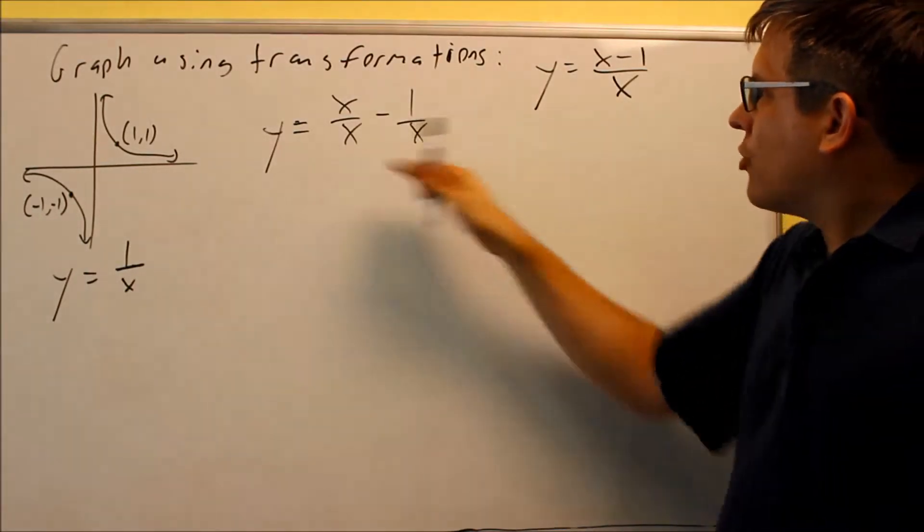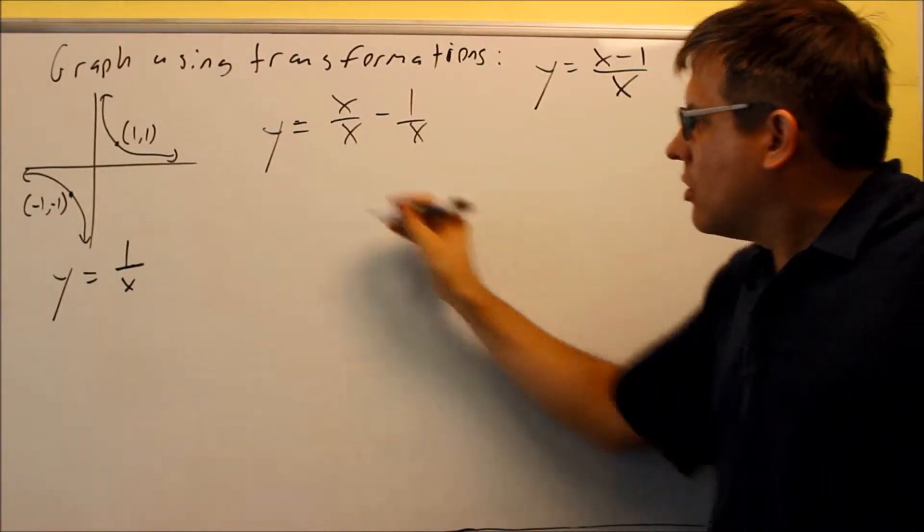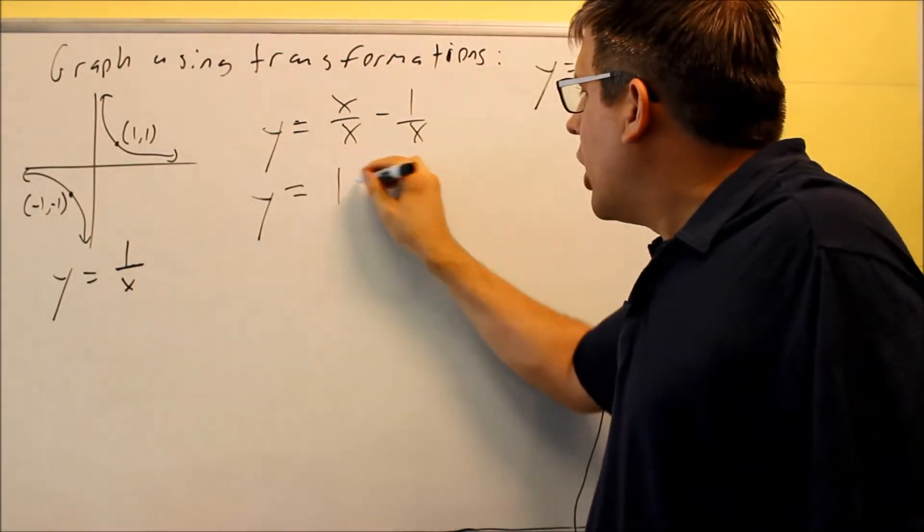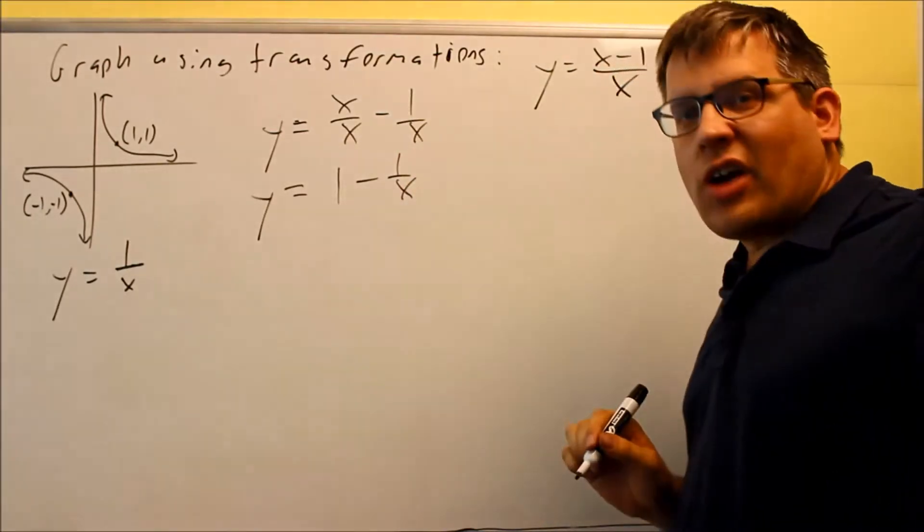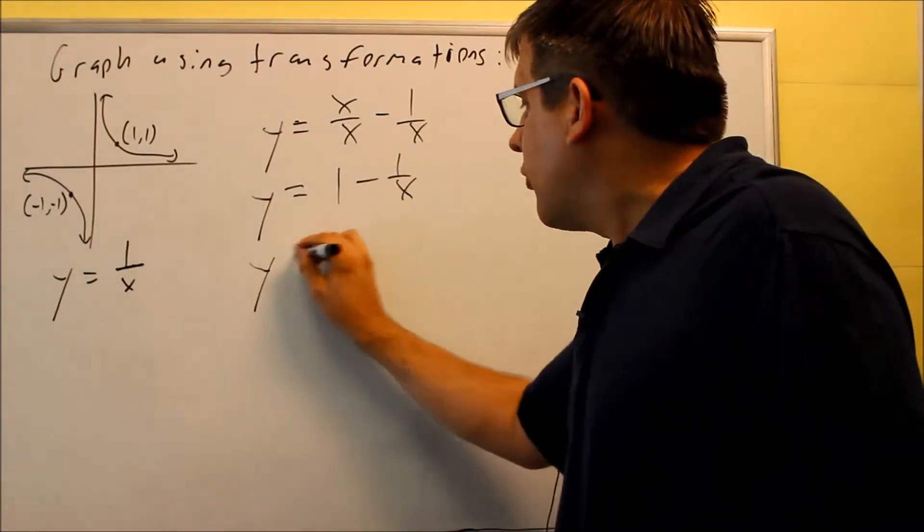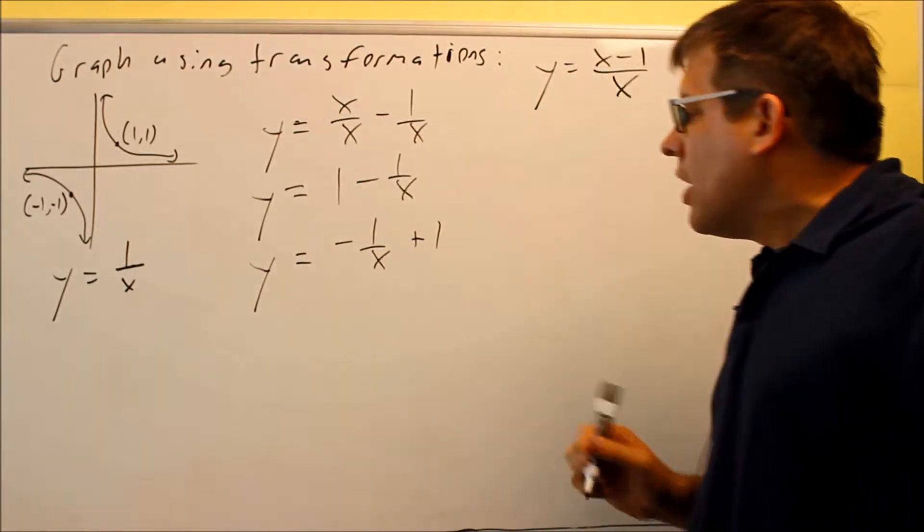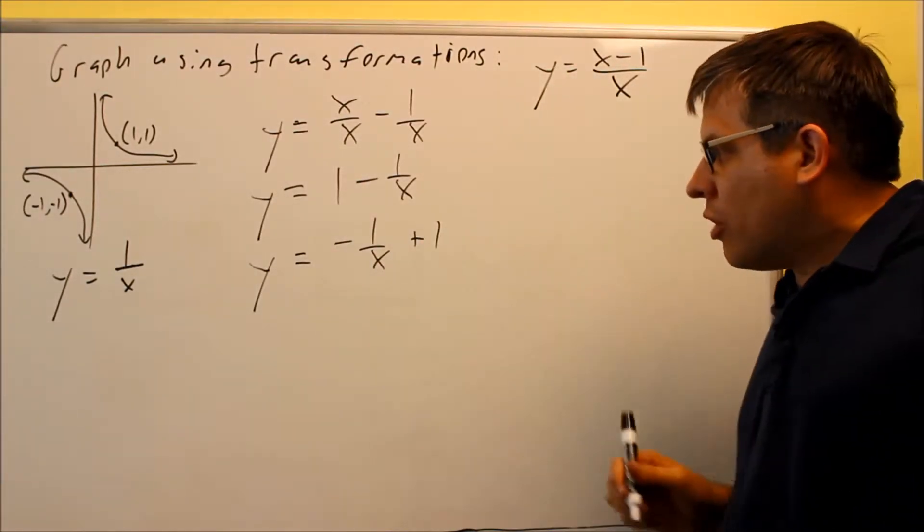We're going to do that for each term, each one being divided by x. If you simplify it, you get 1 minus 1 over x, and then I can reverse the order and write it like this: negative 1 over x plus 1.